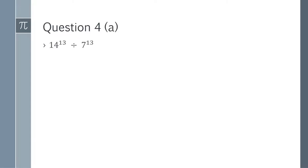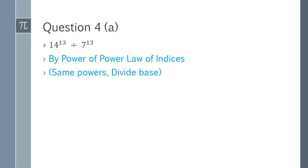Question 4a: 14^13 divided by 7^13. We introduce a new law: if powers are the same, we divide the bases and keep the same power. So (14÷7)^13 = 2^13. That is the answer for question 4a.